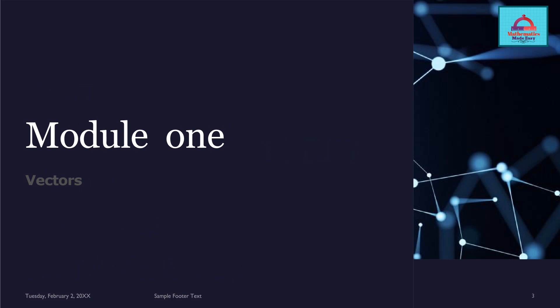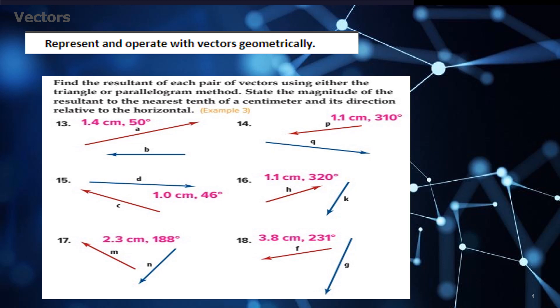So first module that we are going to be looking at and revising is vectors. I am going to show you all the answers of the questions. The first question and the learning objective is to represent and operate with vectors geometrically. Here you see in blue is the question, in red and pink is the solution. So I have given you the answer key for questions 13 to 18 here. Make sure you practice well.